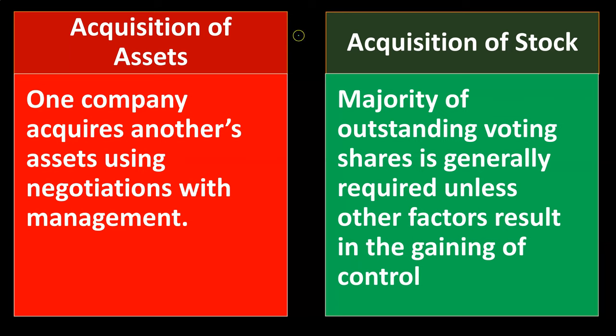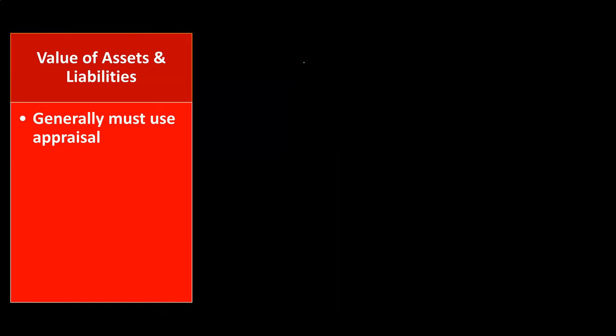The two types to keep in mind are the acquisition of assets and the acquisition of stocks. With the acquisition of assets, we have one company acquiring another's assets using negotiation with management — one entity purchasing the assets of the other. In the acquisition of stock, a majority of outstanding voting shares is generally required unless other factors result in gaining control, typically buying a controlling share of 51% and above of another entity.